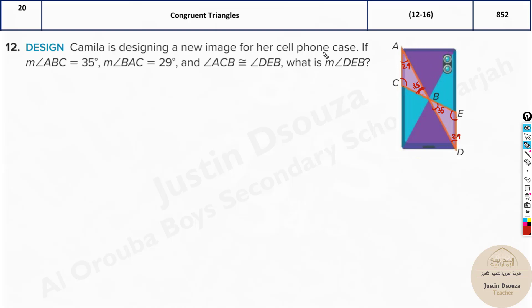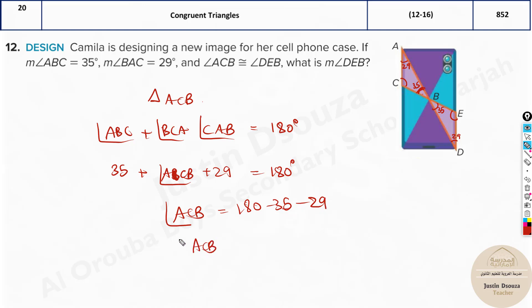From triangle ACB, we know that angle ABC plus angle BCA plus angle CAB equals 180 degrees, because the sum of all angles in a triangle is 180 degrees. Now substitute what we know. ABC is 35 and BAC is 29. We don't know BCA. So take everything to the other side: 180 minus 35 minus 29.